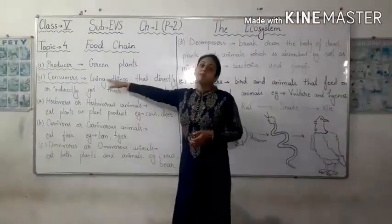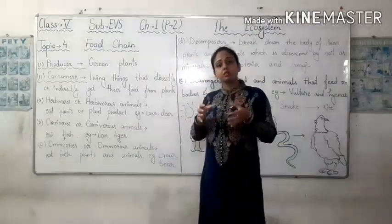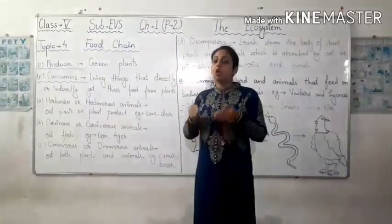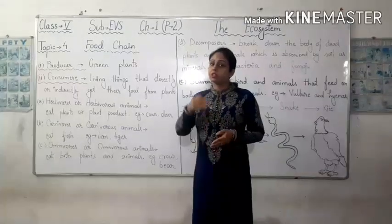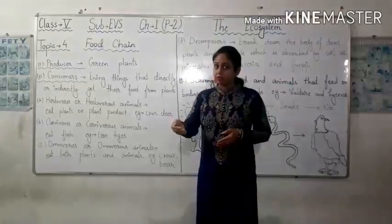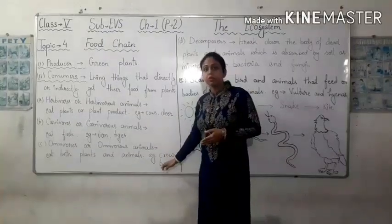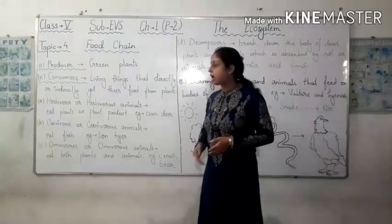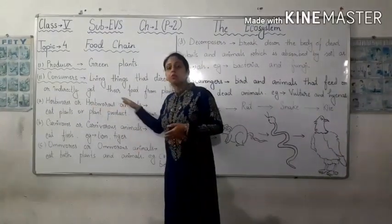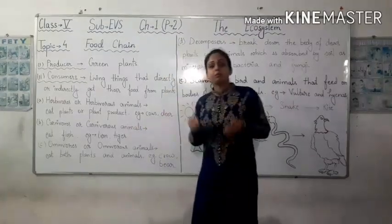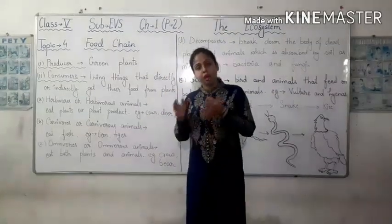Second, we have consumers. Consumers are the living things that directly or indirectly get their food from plants. Now, we have different types of consumers. First, we have herbivores, or herbivorous animals. Herbivores are the animals that eat plants.